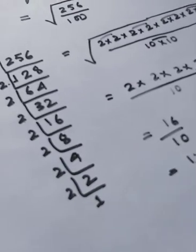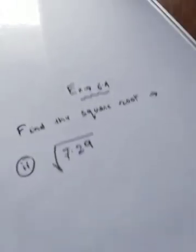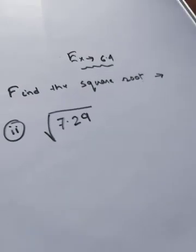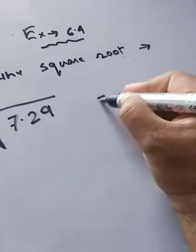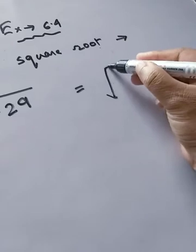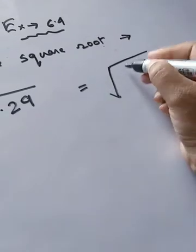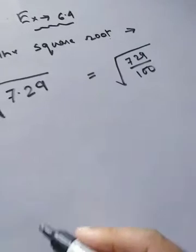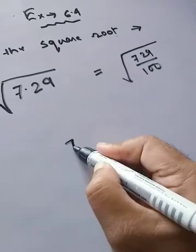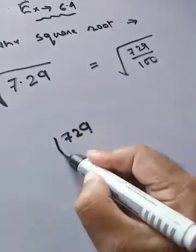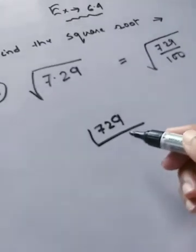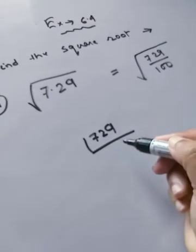Let's move on to sum number two: find the square root of 7.29. We'll do the same thing — first convert the decimal form to fractional form, which gives 729 over 100. Now let's do the prime factorization of 729. The last digit is 9, it's not even, so it's not divisible by 2.